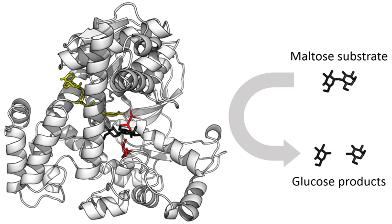A mixed inhibitor binds to an allosteric site, and the binding of the substrate and the inhibitor affect each other. The enzyme's function is reduced but not eliminated when bound to the inhibitor. This type of inhibitor does not follow the Michaelis-Menten equation. An irreversible inhibitor permanently inactivates the enzyme, usually by forming a covalent bond to the protein. Penicillin and aspirin are common drugs that act in this manner.